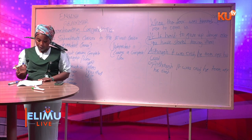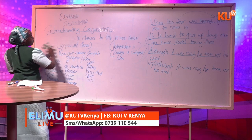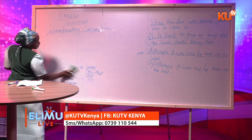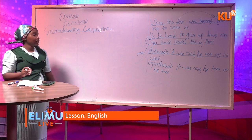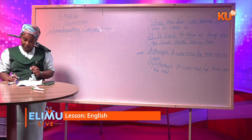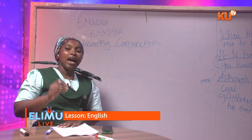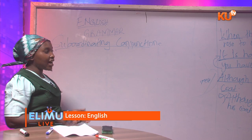There is a difference between subordinating conjunctions and coordinating conjunctions. Coordinating conjunctions join words, phrases, and clauses, but subordinating conjunctions only join clauses. Also, it is very hard to find a coordinating conjunction starting a sentence, but with subordinating conjunctions, many times we start sentences using them.